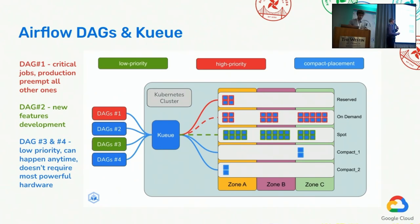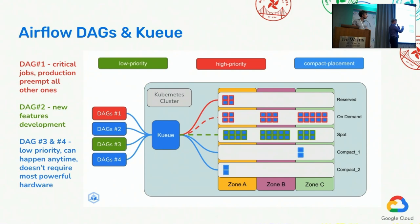The last group is the blue one. Here we want to make sure there are enough resources to run those DAGs. In this particular case, we are using resources called compact, meaning those virtual machines have optimized network connectivity. As a result, those DAGs should be executed with low priority, but there should be low latency on the network. Thanks to Kueue and several operators within your DAGs, you will be able to map execution of those DAGs into appropriate resources in the GKE cluster.